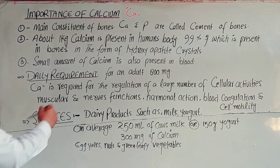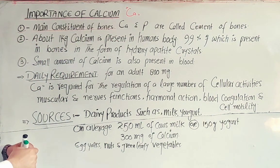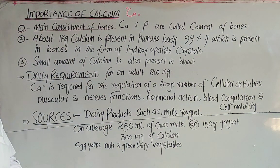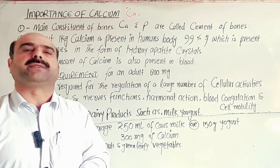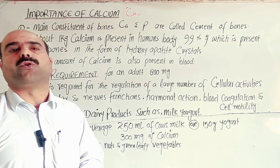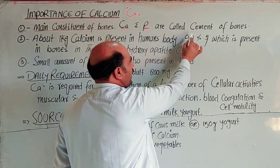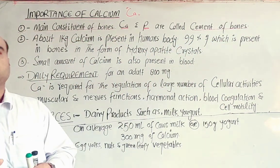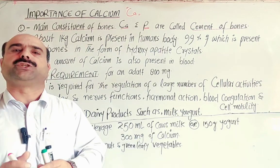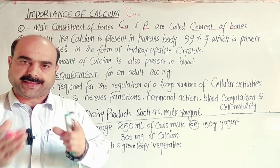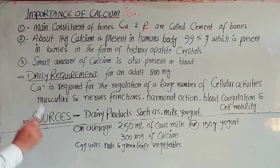The first and most important role of calcium: it is the main constituent component and basic material of bones. Calcium plays a role in bone formation, bone composition, and gives strength to bones. Calcium and phosphorus together are called the cement of bones. If calcium and phosphorus decrease in bones or teeth, they become weak, causing pain and breakdown.